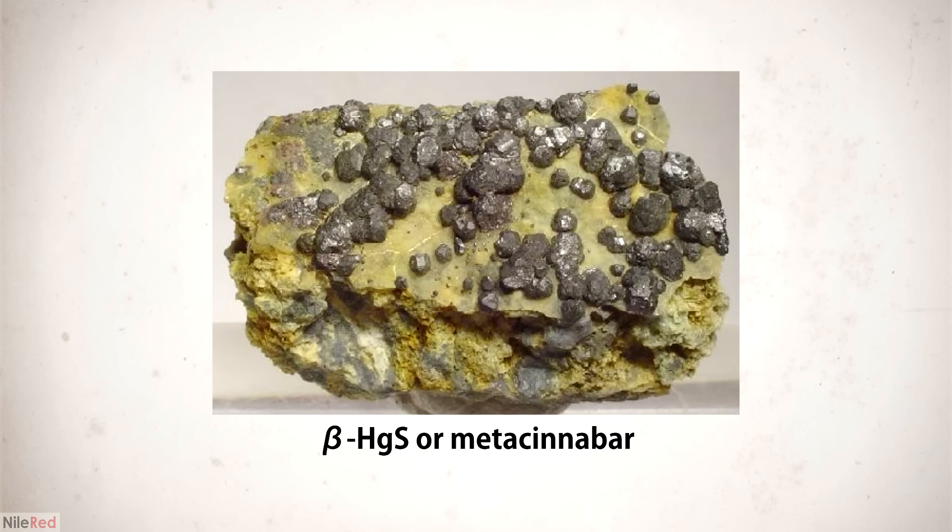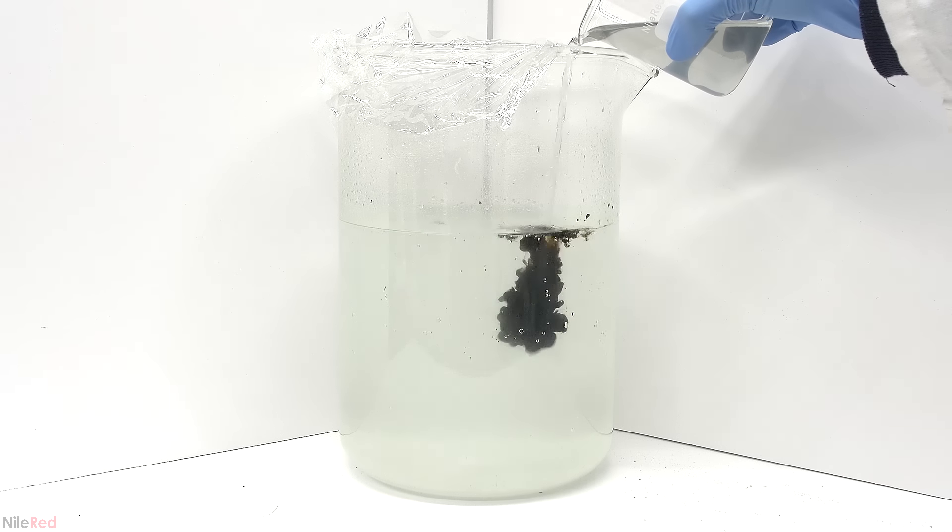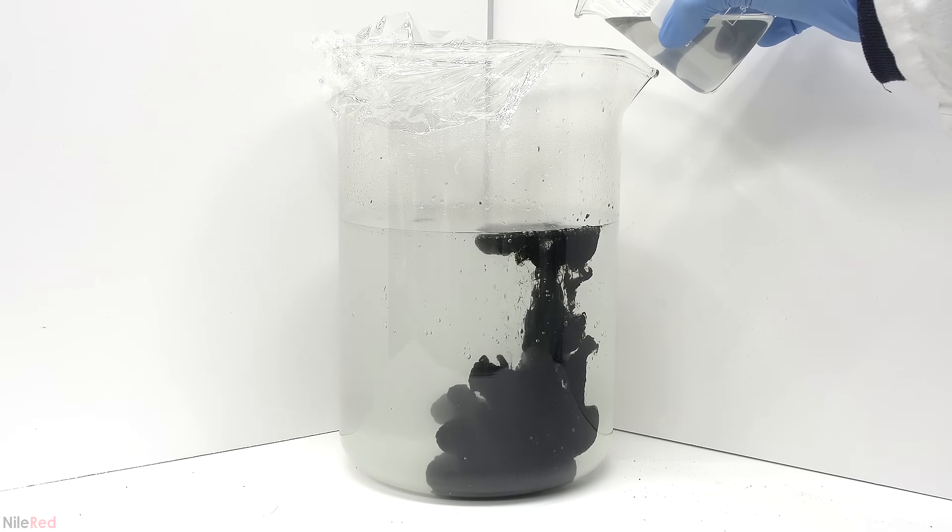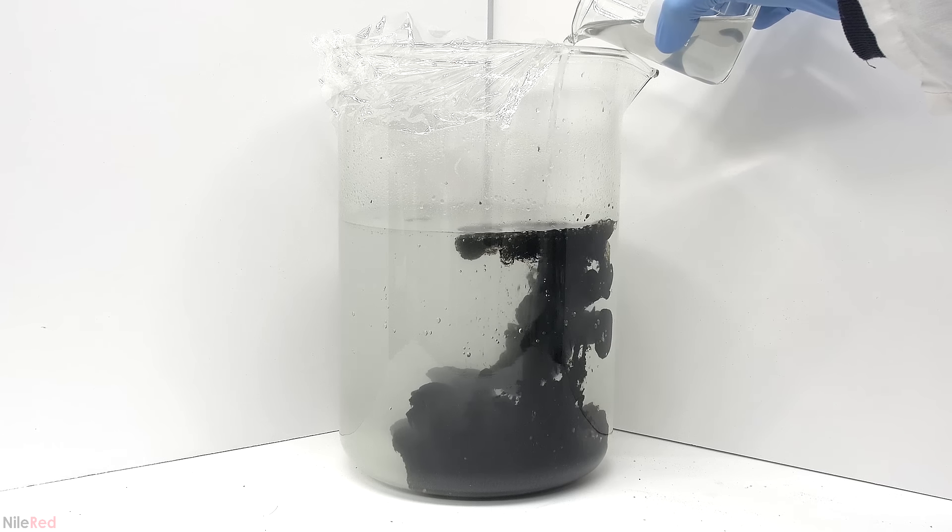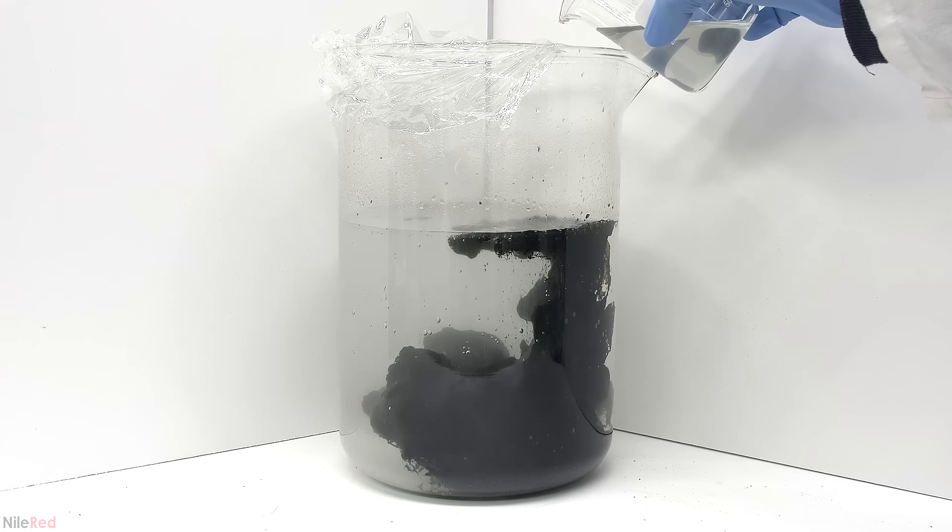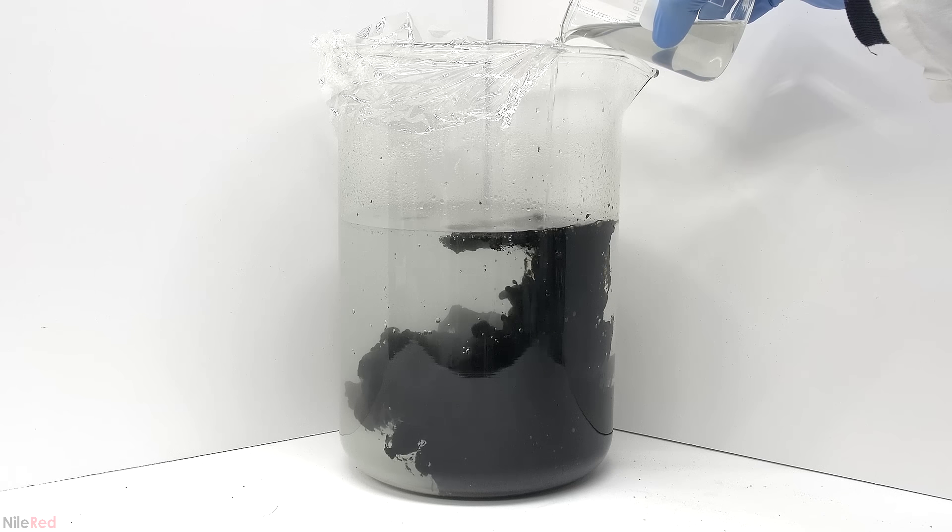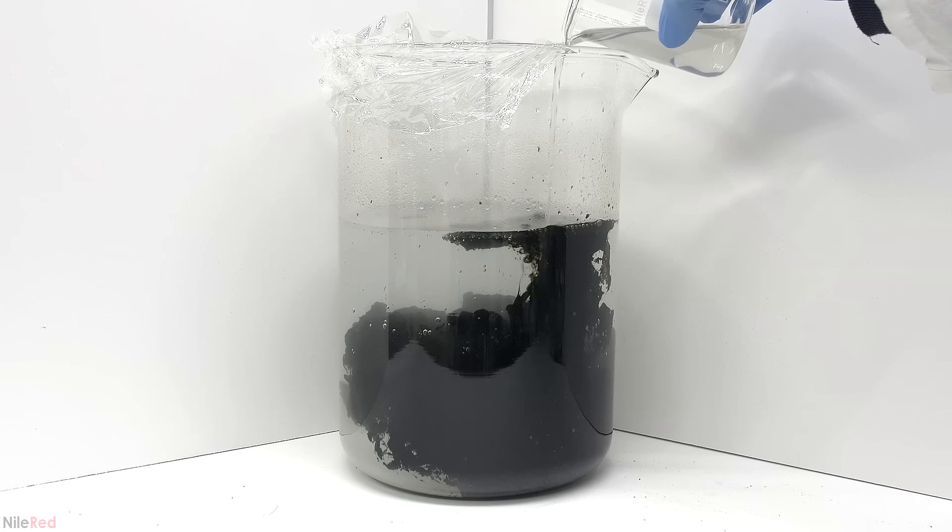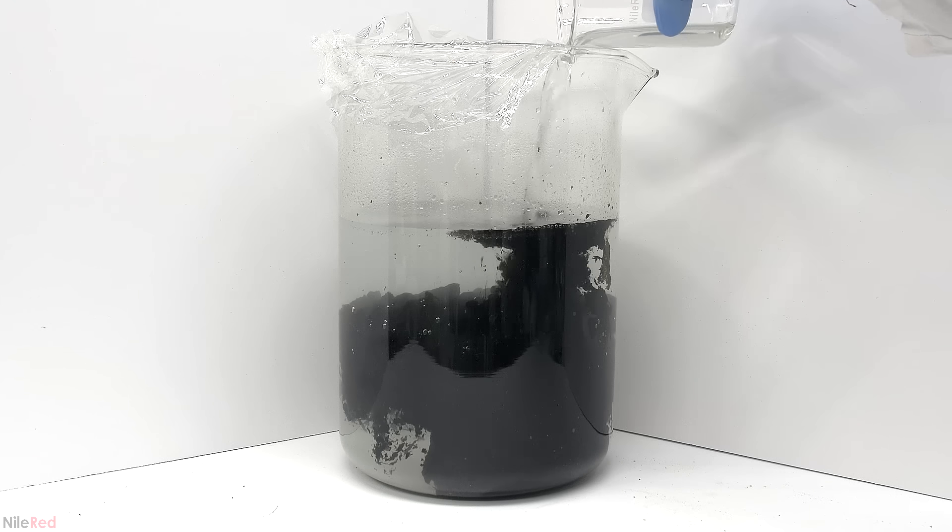The black form, also known as beta-mercury sulfide or metacinabar, is a little bit rarer and not as pretty. When mercury sulfide is produced chemically, like I did in my other mercury waste video, it's usually in the beta form. However, if it's heated above 400C and then allowed to cool, it usually converts to the red form.